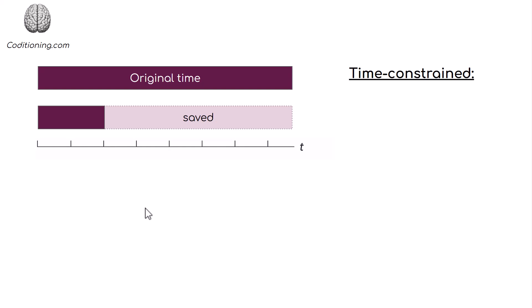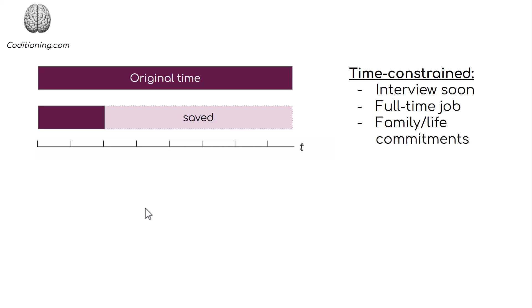This video is for you if you're time constrained. Perhaps you have an interview coming up very soon and you don't think you have enough time. Maybe you have a full-time job, family commitments, other hobbies you want to pursue, or maybe it's a combination of these — or you just want to get through your LeetCode grinding or your DSA study and algorithmic problem solving very quickly. Perhaps you want to get through 200 problems, 300 problems, whatever it is. This video is for you because it's all about how you can save time.